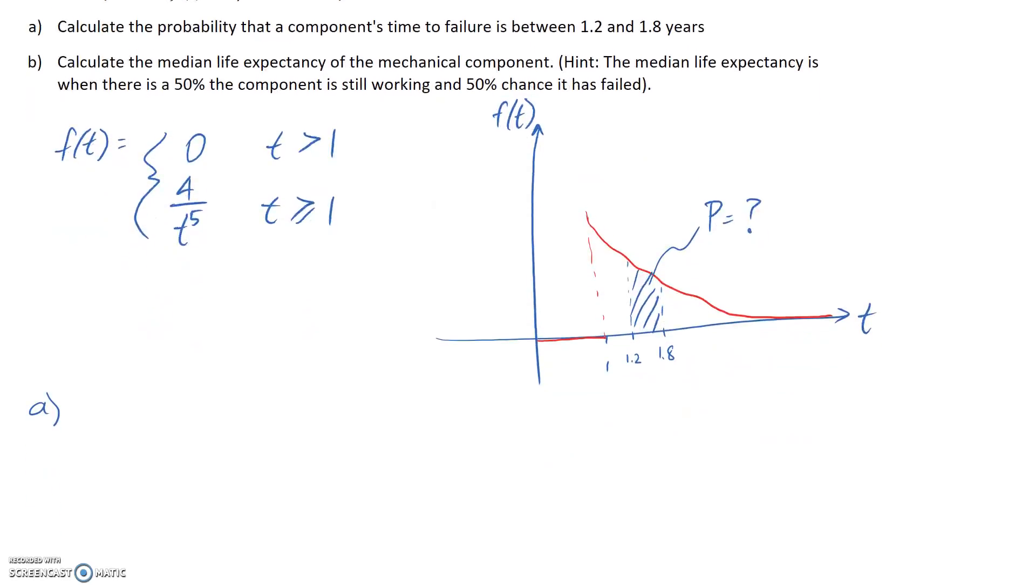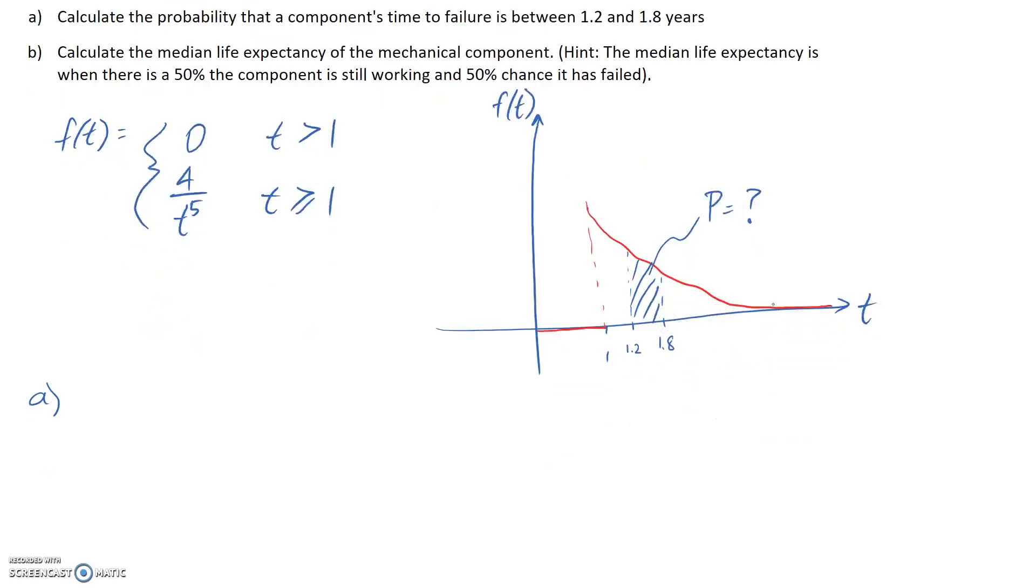We can do this by using integrals, since it's basically just looking at the area under the curve. So our probability that we're looking for is going to be the integral evaluated from these bounds of 1.2 to 1.8. And then we just have to take the equation that describes this line, which is 4 over t to the power of 5, and integrate it with respect to our variable, which is time. So once we've figured that out, whatever the number is corresponds to the area or the probability in this context of that happening.